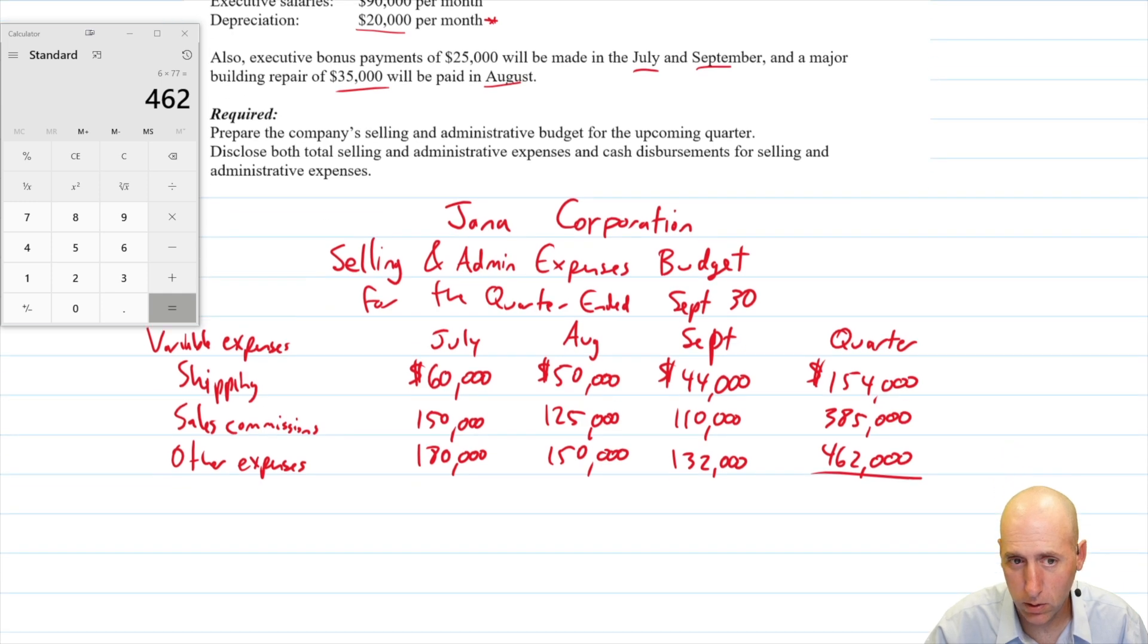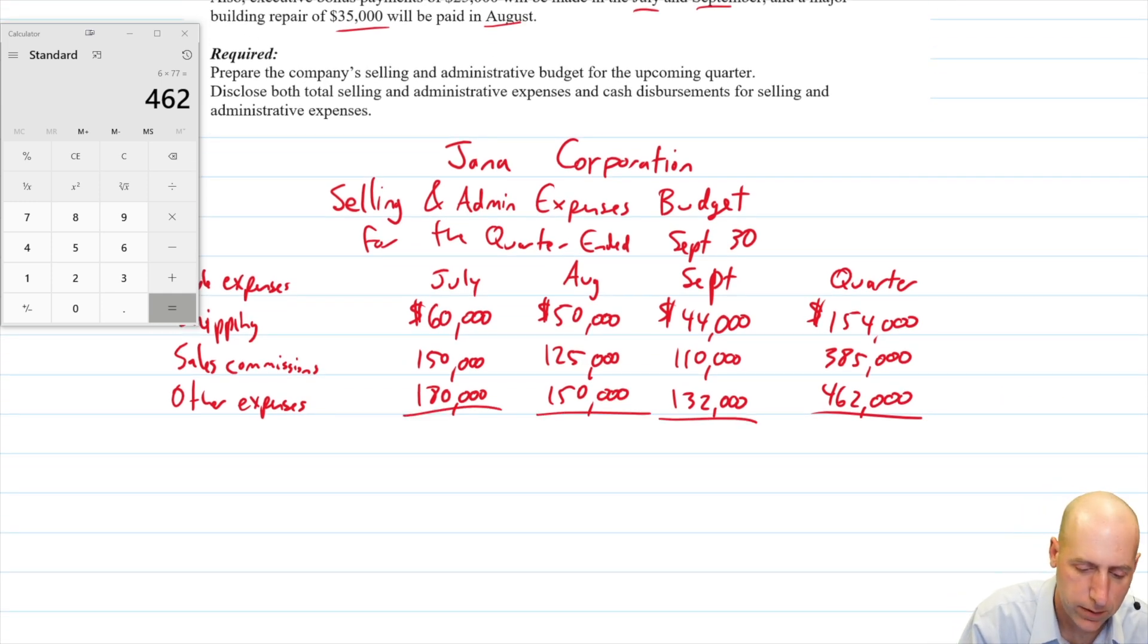Okay, so let's total these up to get our total variable expenses. 60 plus 150 plus 180, 210 plus 180 is 390. 50 plus 125 plus 150, 225. 44 plus 110 plus 132. I should be able to do this, but I don't trust myself. 286.